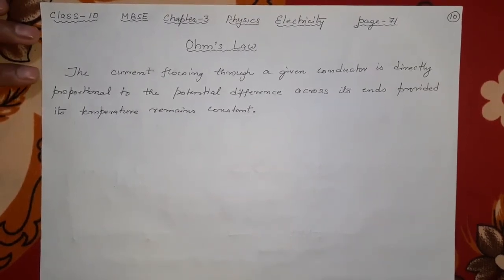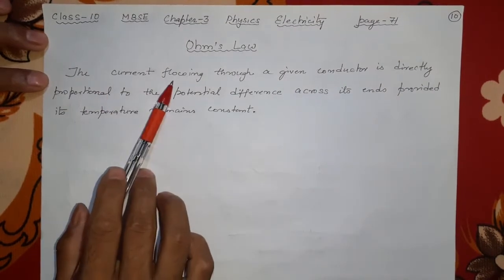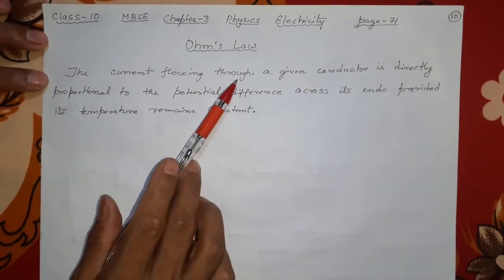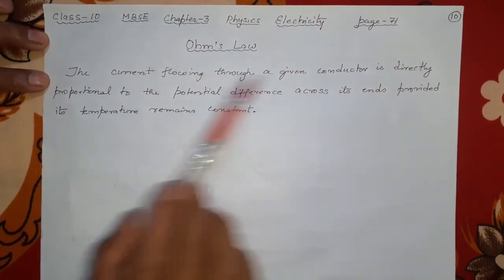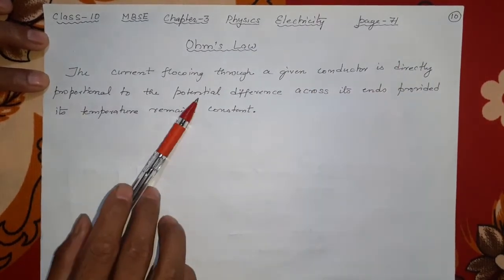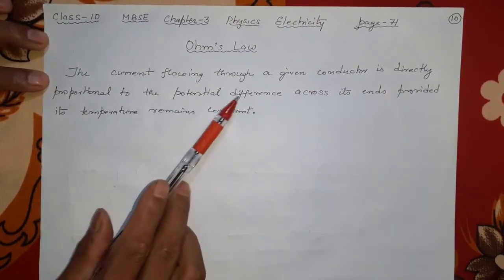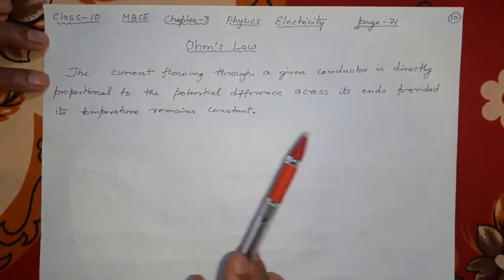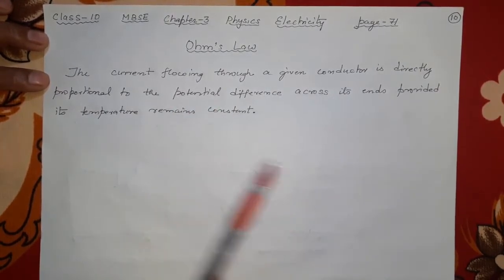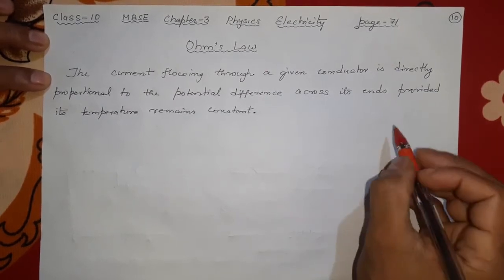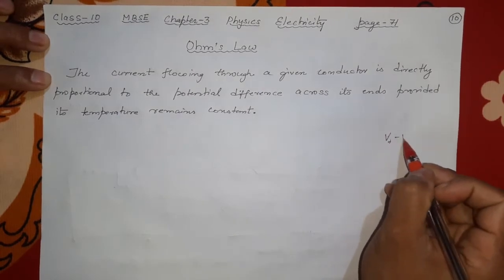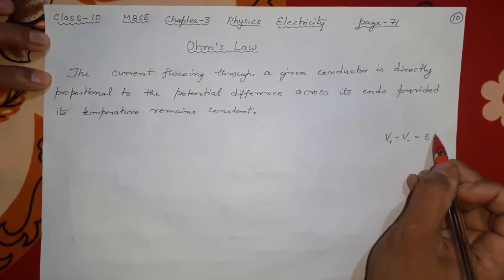Here is the statement and definition of Ohm's Law: the current flowing through a given conductor is directly proportional to the potential difference. If you provide more potential difference — suppose V-plus minus V-minus is 5 volts — the current will be a certain value. If you increase the potential difference, the current increases accordingly.